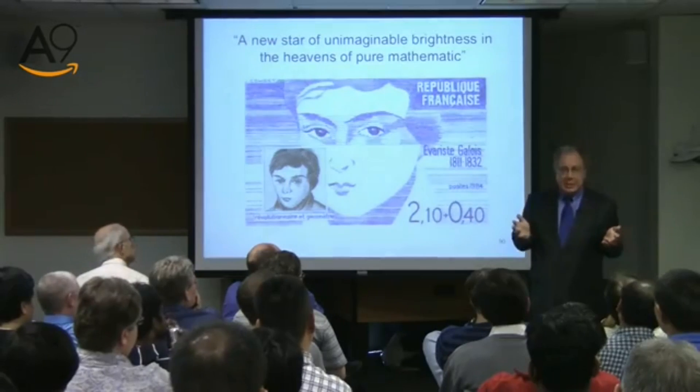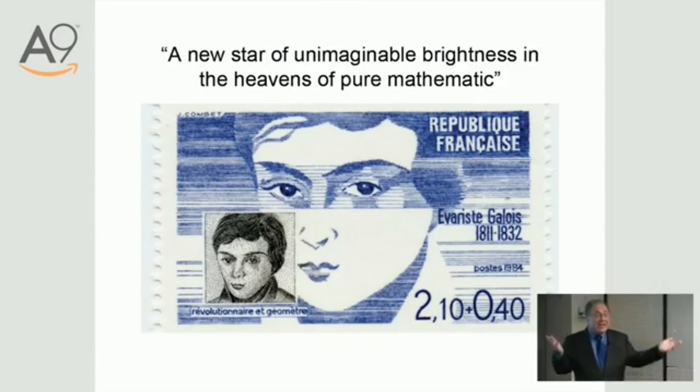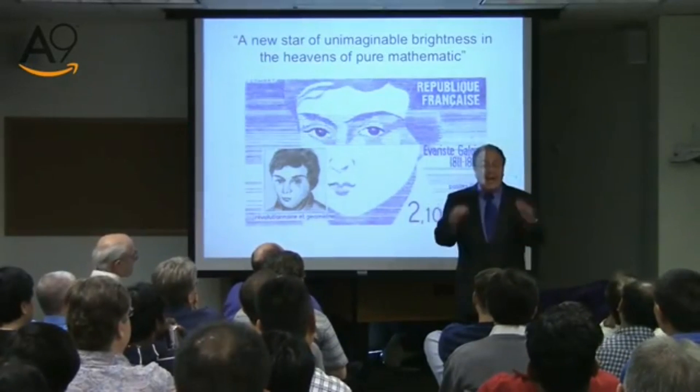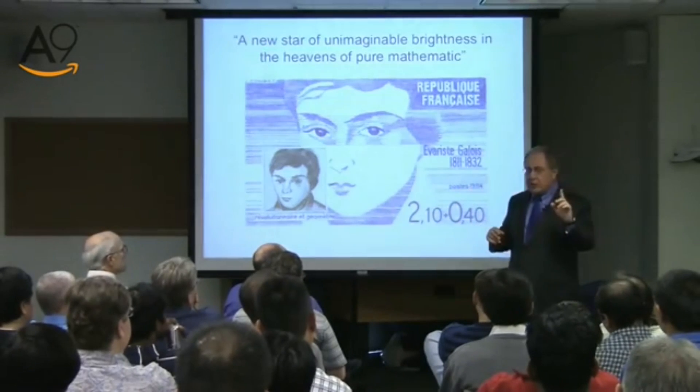A terrible loss. The quote says 'a new star of unimaginable brightness' — from another great 19th century mathematician, Felix Klein. But actually, the turning point is not 1832 right away. He dies, nobody pays any attention, and he's buried in a pauper's grave — an anonymous grave, nobody cares. Mozart was buried in a pauper's grave too, so it happened.